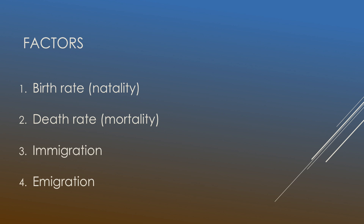Birth rate, as you probably already know, is the ratio between births and individuals, and it's sometimes referred to as natality. The death rate is the ratio between deaths and individuals, also known as mortality. Immigration is when individuals move into a population, and emigration is the exact opposite — that's when individuals move out of a population.